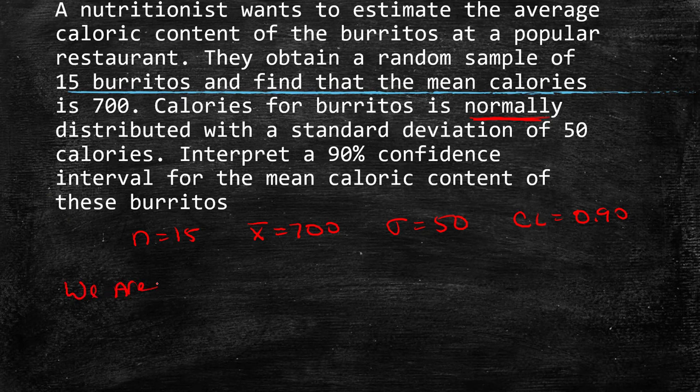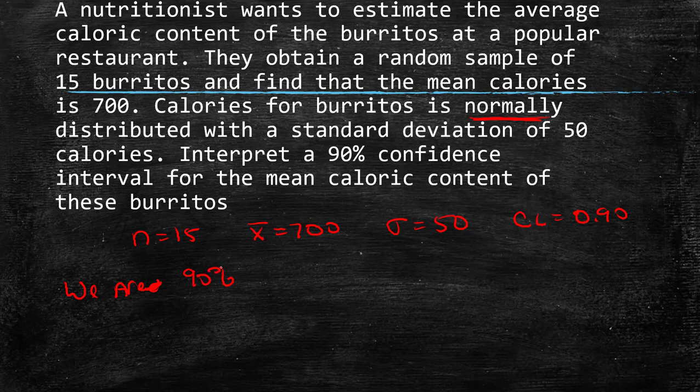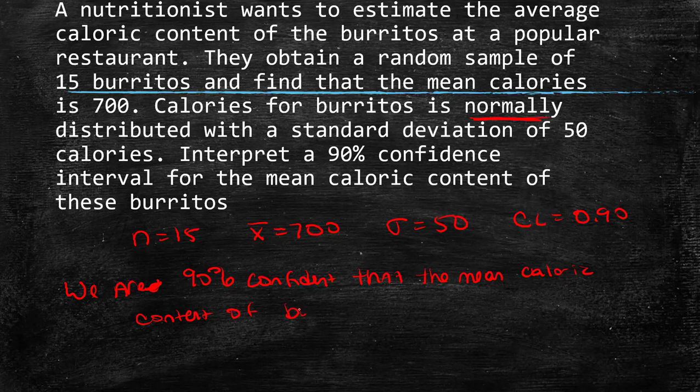Go back to this and let's interpret. We are 90% confident that the mean caloric content of burritos is between 678.765 and 721.235. Oh, there's way too many calories in a burrito. They're so yummy though. Okay, well, that's it. That's how we find our confidence intervals using StatCrunch. And so now we don't have to worry about adding and subtracting and making sure the order of operations all correct. All we have to do is know where to go. Z-stats. Yay, stats!